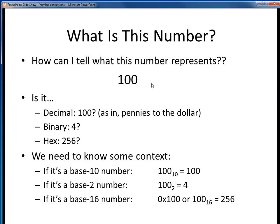So here's a question for you. Given this number, 100, how can I tell what it represents? Is it decimal 100 like pennies in a dollar? Is it binary 4? Or is it hex 256? We can't make any clear determination until we know a little more specific context. We need to know in which of the three numbering systems this number is represented. If we're talking decimal, then of course this is the expected 100. If we're in binary, then this is equal to decimal 4. Or if we're in hex, then this is equal to decimal 256.